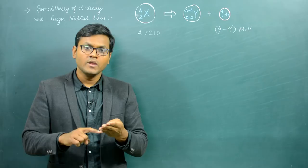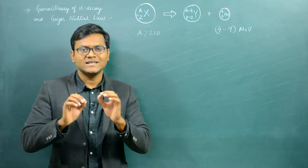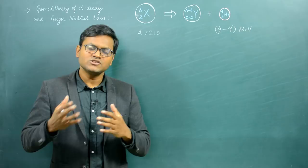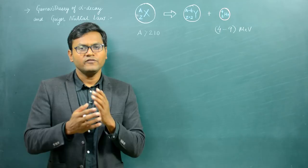Before diving into the Gamow theory, let's discuss why alpha decay happens in the first place. Why is it that only large nuclei undergo alpha decay and not small or medium size nuclei? The answer to this question lies in the nature of the nuclear force.